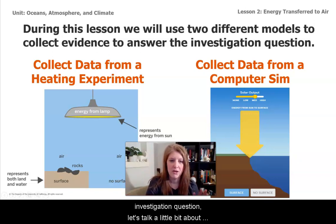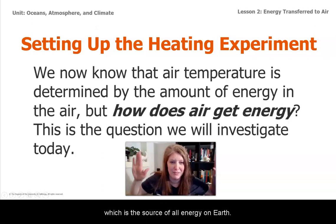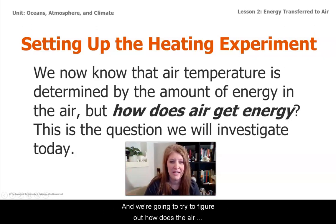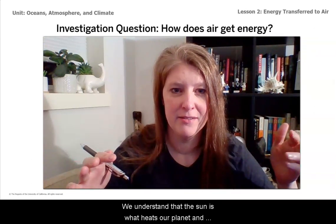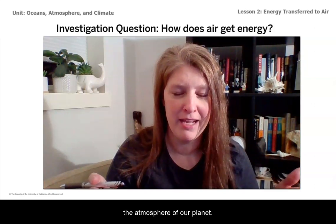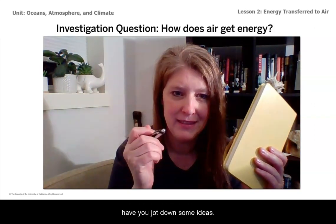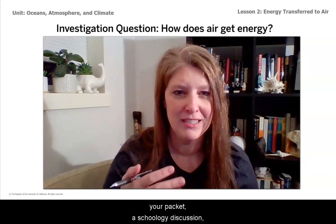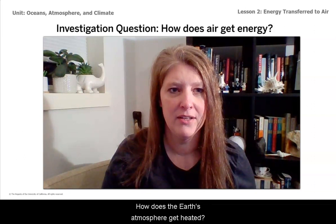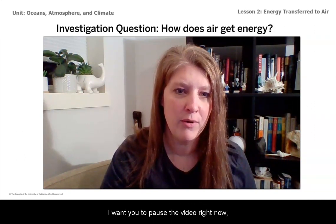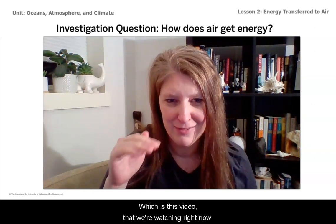Before we get to those two models, let's talk a little bit about claims. We know that the energy that comes to the air has to come from the sun, which is the source of all energy on earth, and we're going to try to figure out how the air even gets heated. So before we continue on, I want you to jot down some ideas in your notebook, your packet, or a Schoology discussion — what do you think is happening? How does the earth's atmosphere get heated? Pause the video right now and do that before watching the last little bit of this video.